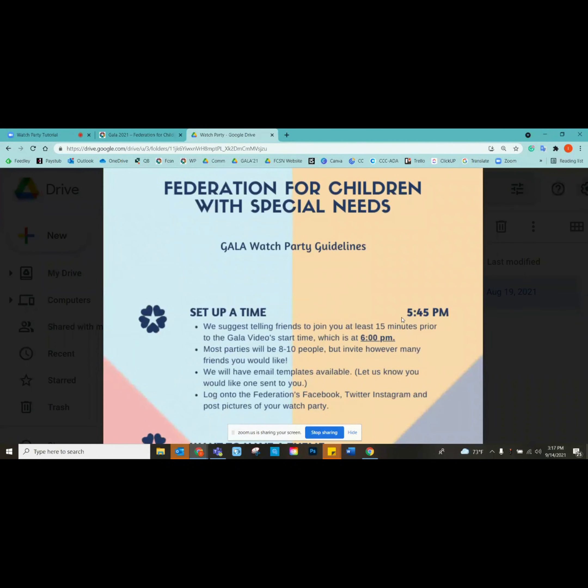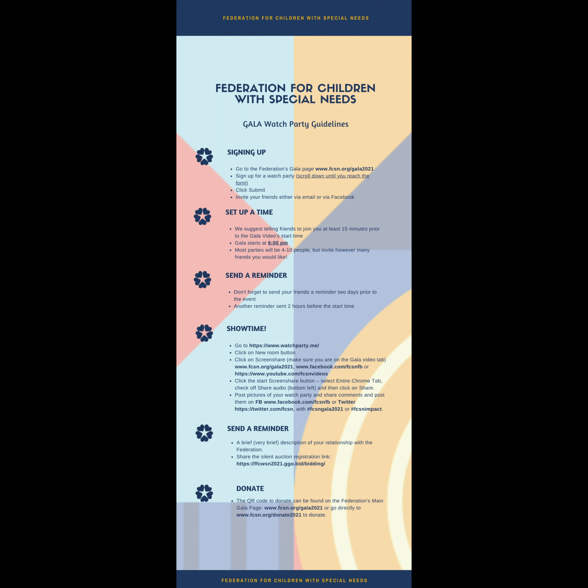After you've done that, the watch party guide tells you how to set up. Start at 6 PM — you want to make sure you're there at least 15 minutes prior. You're also going to want to make sure your friends have the correct link, that they've been invited, and have the URL. You'll also want to share how to log on to the Federation's Facebook and Twitter so you can post pictures of your watch party and comments.